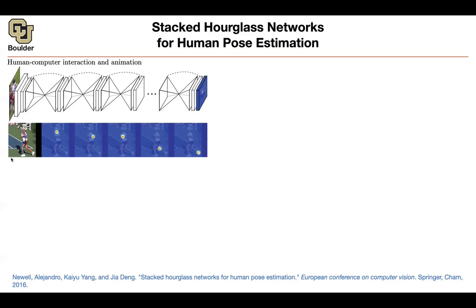If you look at pose estimation results, they always show you an image, but underneath are the heat map predictions. You are locating the neck, left elbow, wrist, right knee, right ankle — that's how you detect them. You are predicting heat maps. The motivation for this hourglass-type architecture is that you want to capture information at every scale — the small scales and the large scales.